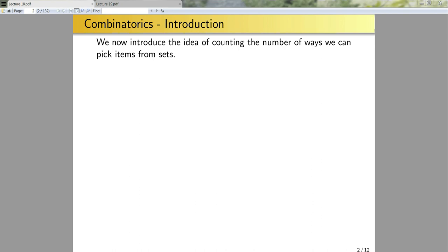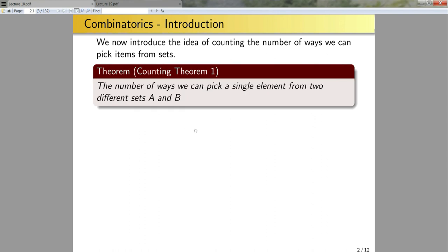This tentative way of introducing combinatorics doesn't cover everything, because sometimes we'll want to pick the same item from a set, and sets don't have repeated elements. So later on we're going to introduce the idea of multisets to fill this out. The number of ways that we can pick a single element from two different sets A and B, with cardinality N and M respectively, is simply going to be equal to M times N.